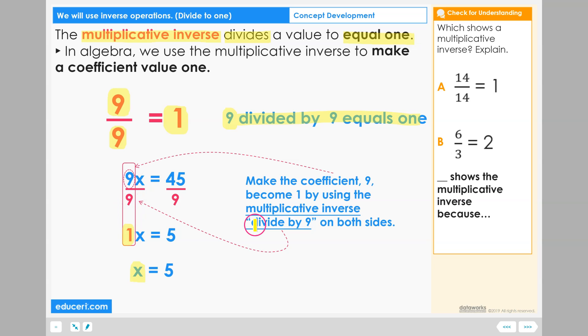How can you do that? Well, we can make the coefficient nine become one by using the multiplicative inverse, divide by nine. And as we learned with solving equations, when we do these inverse operations, we have to do them on both sides.